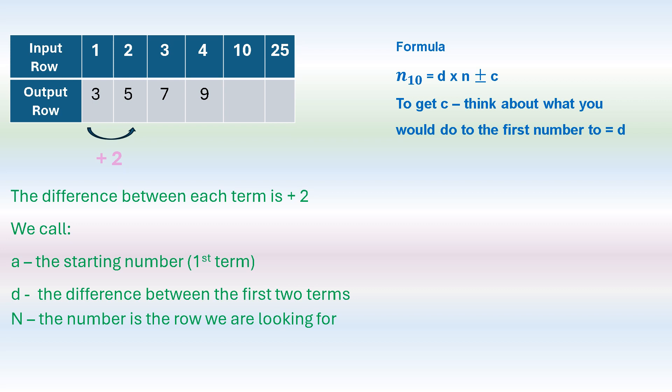Now let's solve for the rule in this table. D is the difference, N is the number we're looking for. To get C, you ask yourself: what must I do to the difference to get the starting number? So what must I do to 2 to make it 3? I'm going to add 1, so C is plus 1. Our rule is N times 2 plus 1 — that is N times the difference, plus C.